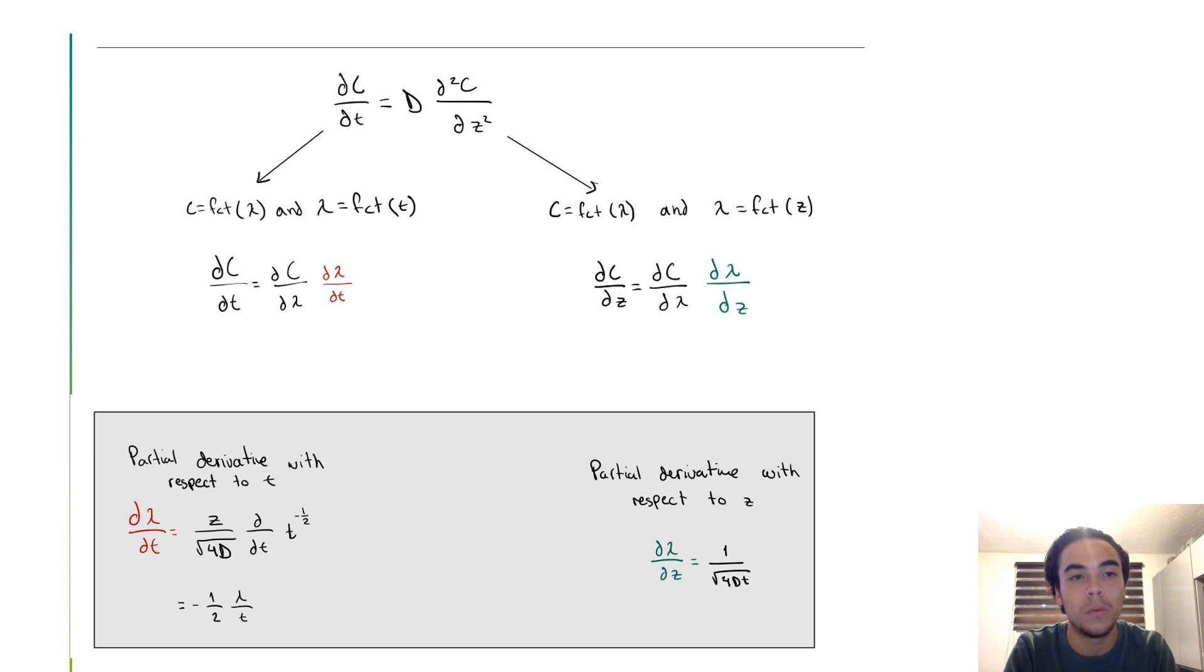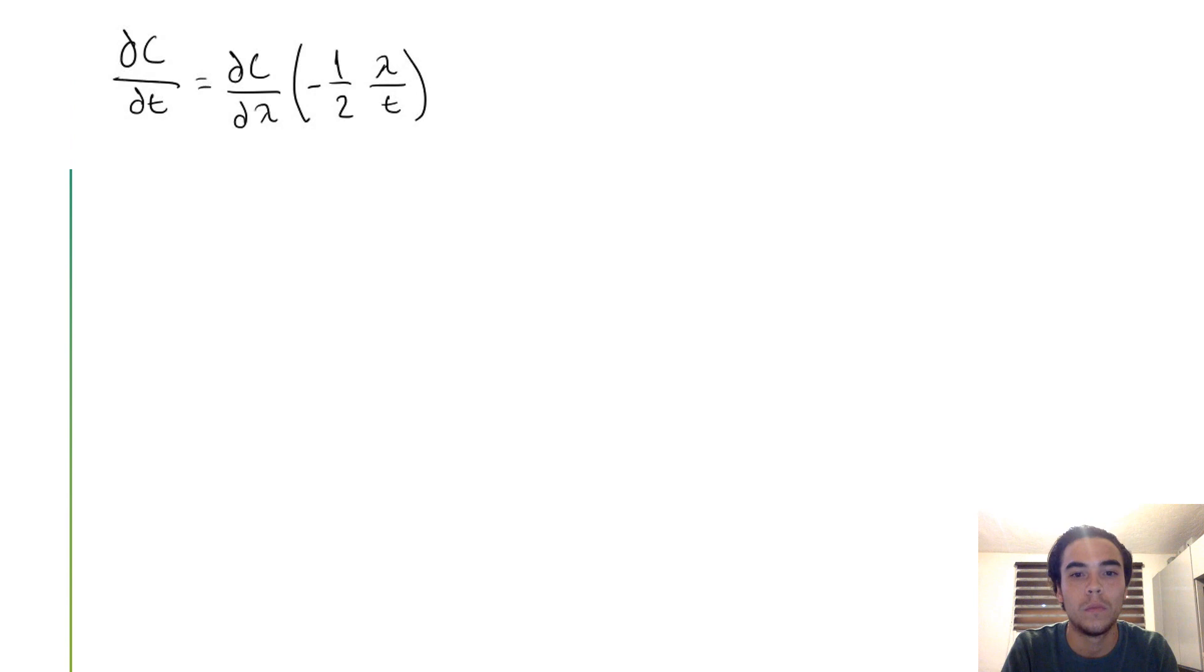We obtain a partial derivative with respect to t on this side. When we do the partial derivative with respect to z on the other side, we have this following result.